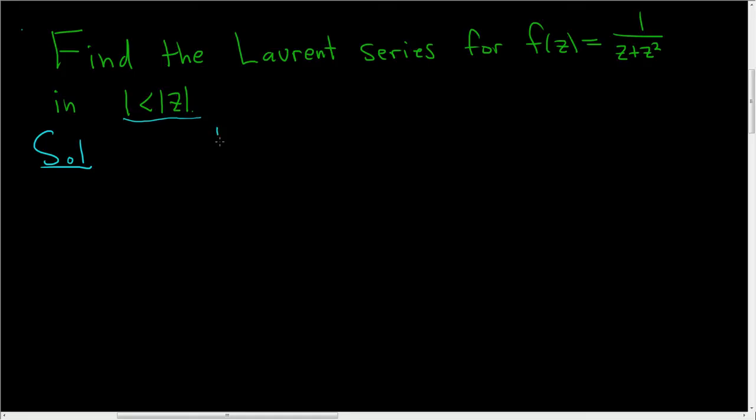It basically says if you have 1 over 1 minus w, that's equal to the infinite sum as n runs from 0 to infinity of w to the nth power. And this is true if the modulus of w is less than 1.